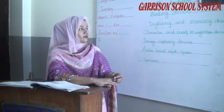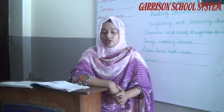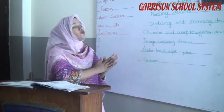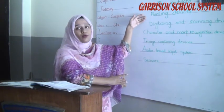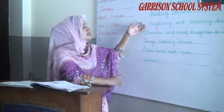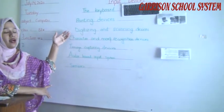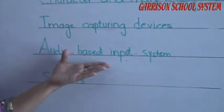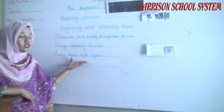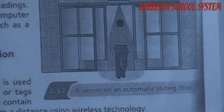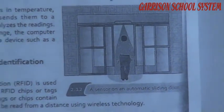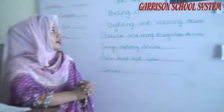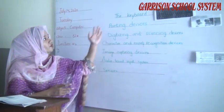In summary, in this chapter on input devices, we covered the keyboard, pointing devices such as keyboard and mouse, scanning devices, OCR, MICR, OMR, character and mark recognition devices, image capturing devices, audio-based input systems such as the voice recognition system, and sensors.